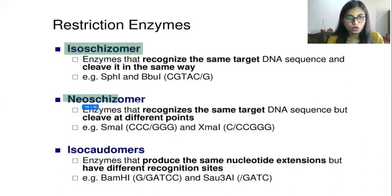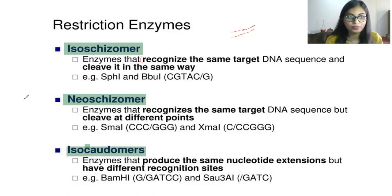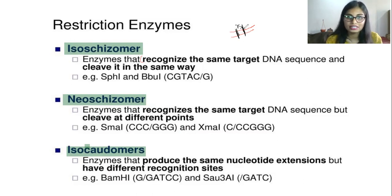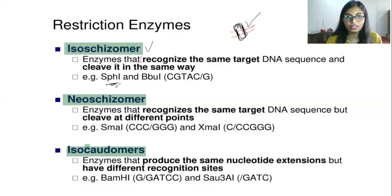Apart from the four different restriction enzymes, three more terms are important: isoschizomers, neoschizomers, and isocaudomers. Isoschizomers are enzymes that recognize the same target DNA sequences and cleave it in the same way. For example, two DNA strands are there — the isoschizomer recognizes the target site and cleaves in the same way. Examples of isoschizomers are SphI and BbuI. If a restriction enzyme recognizes between cytosine and guanine, only that same site will be cleaved — not four base pairs away or a thousand base pairs away.